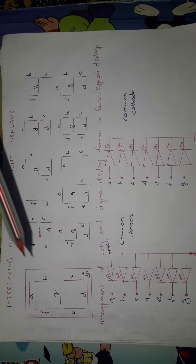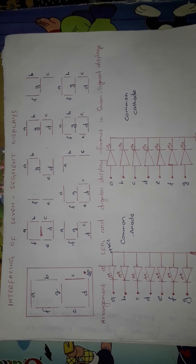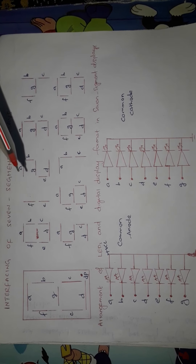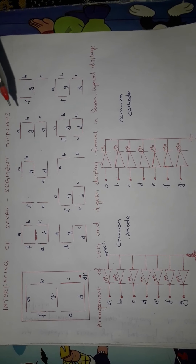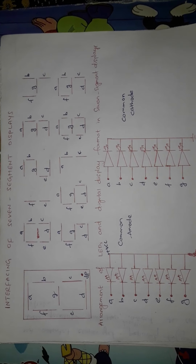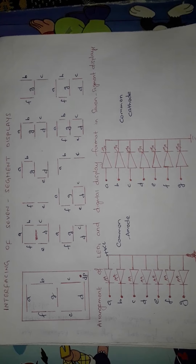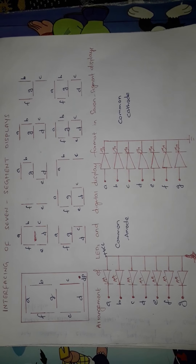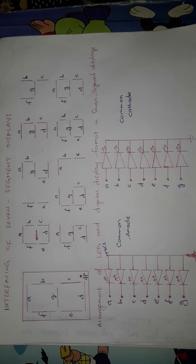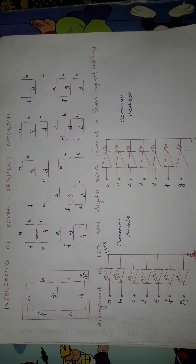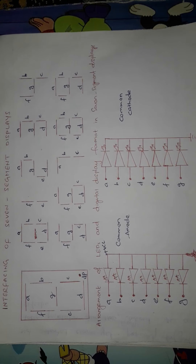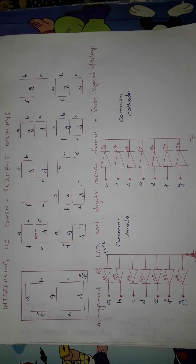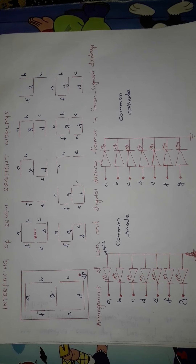These seven segments are arranged in a pattern so that they can display alphanumeric characters. There is also one more segment, DP, which is the decimal point. You need to select particular segments to turn on in order to display the selected number or character.